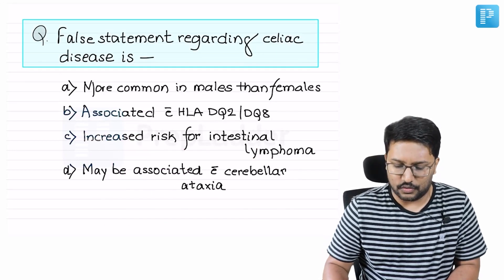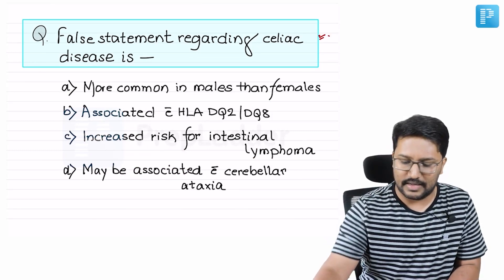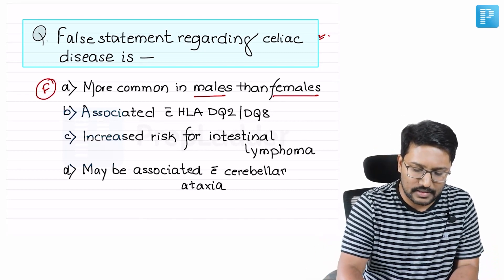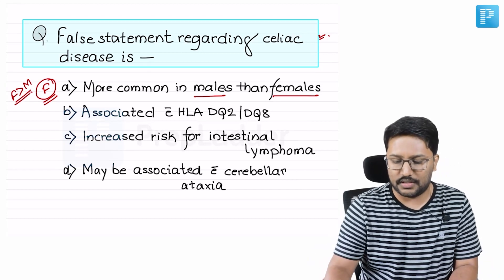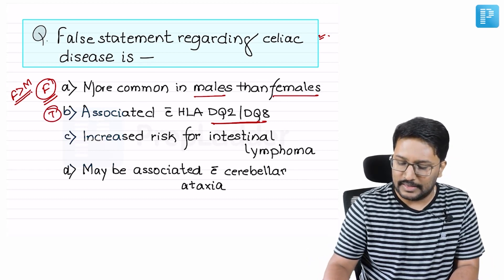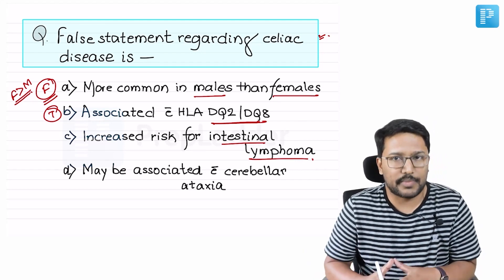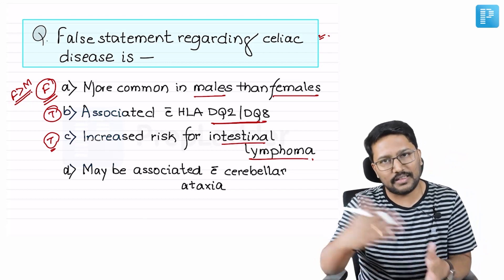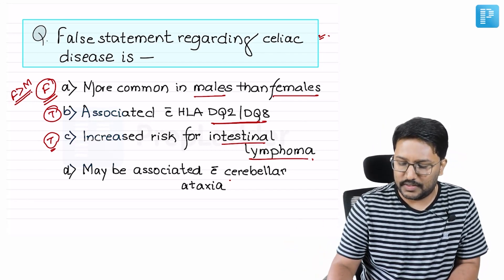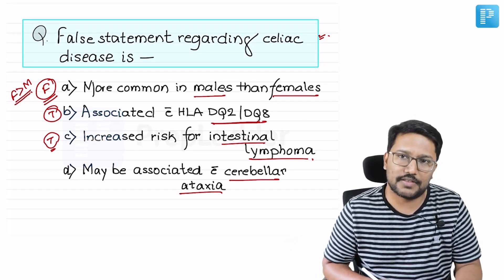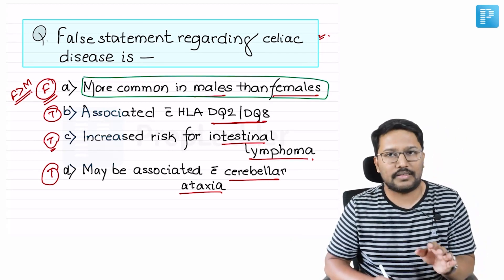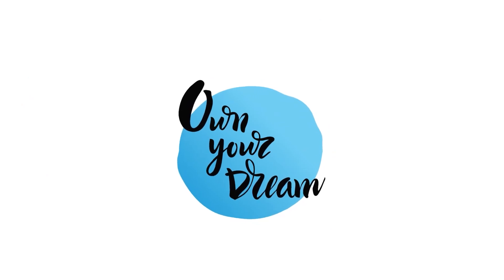Going back to question one: the false statement regarding celiac disease is 'more common in males than females.' This is an autoimmune disorder and is actually more common in females than males. HLA-DQ2 and DQ8 association is a true statement. Increased risk of intestinal lymphoma due to malignant transformation from lymphocytic infiltration is true. May be associated with cerebellar ataxia — that is one of the irreversible extra-intestinal manifestations of celiac disease, also true. So the correct answer is: more common in males than females.